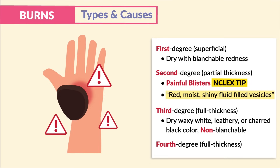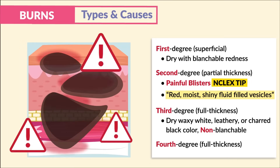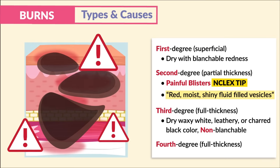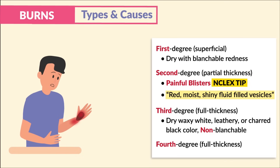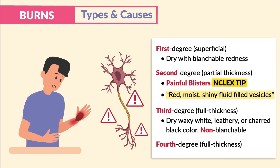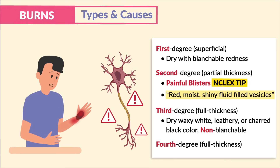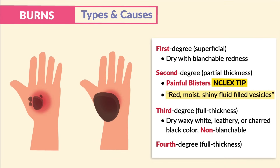Fourth degree burns are also full thickness burns and are the worst by far, as they go through all the layers of skin down to the muscles and even the bones. A unique sign is the lack of pain, since the nerve endings are destroyed by the burn. Charred areas may look similar to third degree burns, but these are far worse since they're far deeper.